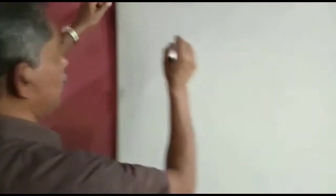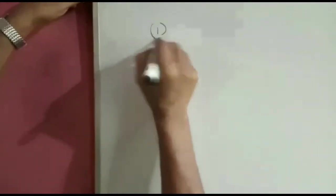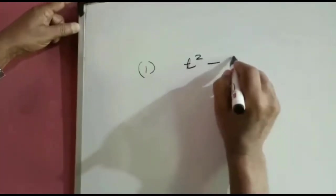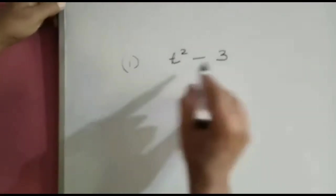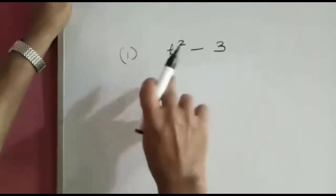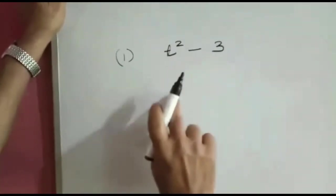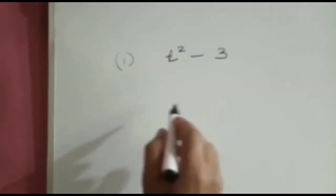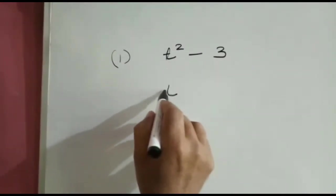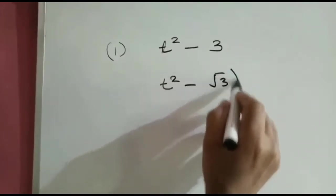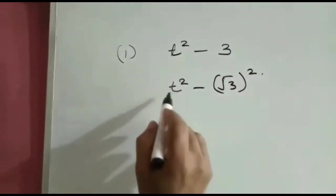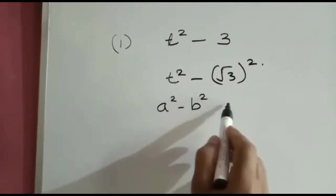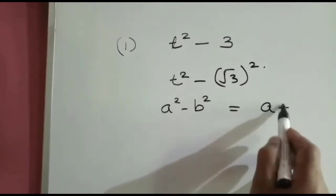Now let us see how to find out the zeros of a quadratic polynomial. Let us take a simple case in which the first polynomial is t² - 3. We know it's a quadratic polynomial. According to our method, it is to be factored into two linear polynomials. You know this can be written as t² - (√3)². Now it is in the form a² - b², which is factored as (a + b)(a - b).